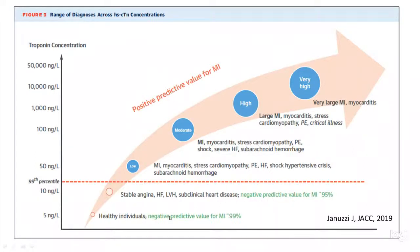When the troponin is higher than the 99th percentile, it means the patient is having some sort of myocardial injury. If it is around 50, there could still be other causes — hypertension, heart failure, pulmonary embolus, or shock. However, it is considered positive because it exceeds the 99th percentile, and the odds of myocardial infarction increase as the troponin goes higher. A very large MI on an LAD STEMI would produce troponins of about 10,000 nowadays, and a troponin of 1,000 is also very suggestive of MI.